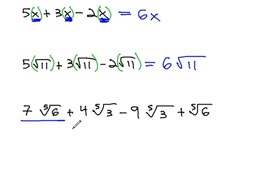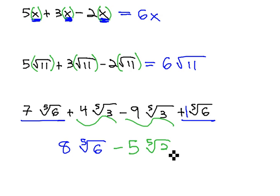For example, the 7 has a 5th root of 6. It matches the 5th root of 6 at the end, which, just like with variables, has an invisible 1 in front. 7 plus 1 gives us 8 of these 5th roots of 6. We also have like terms that have 5th roots of 3. So we subtract the numbers in front: 4 minus 9 is negative 5 of these 5th roots of 3.